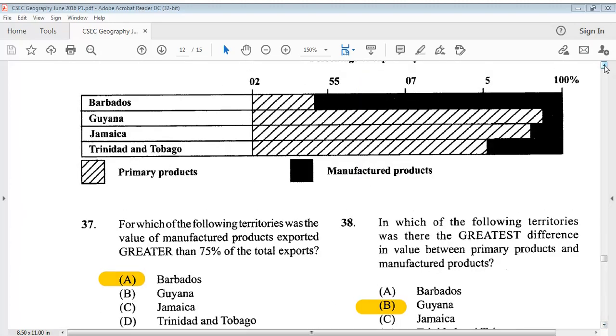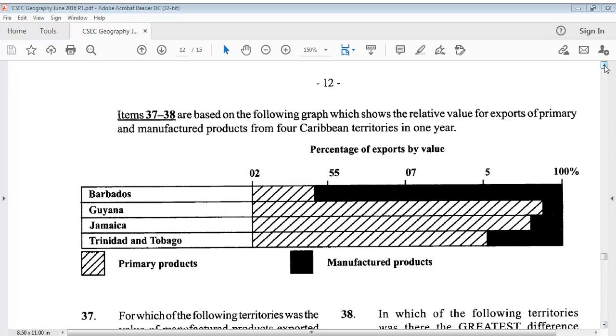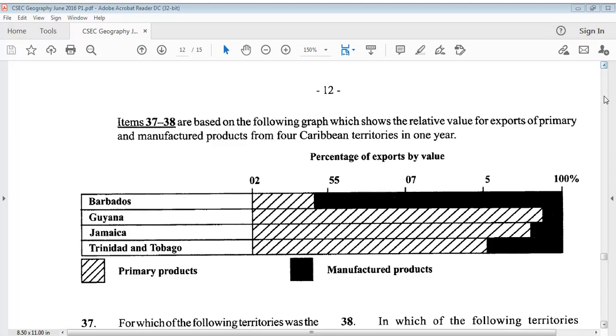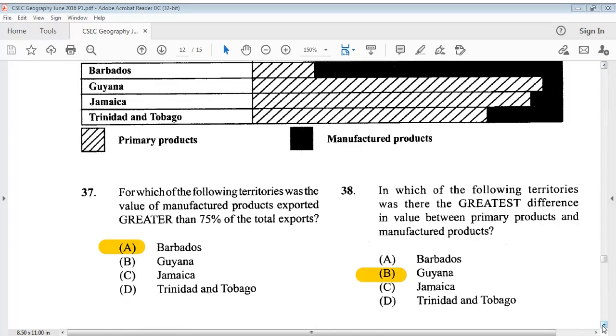Items 37 to 38 are based on the following graph, which shows the relative value for exports of primary and manufactured products from four Caribbean territories in one year. You can take a look. Question 37 says, for which of the following territories was the value of manufactured products exported greater than 75% of the total exports? The answer is A, Barbados. Question 38 says, in which of the following territories was there the greatest difference in value between primary products and manufactured products? The answer is B, Guyana.